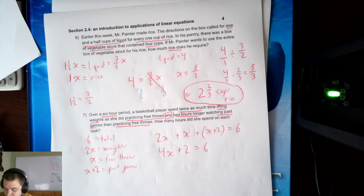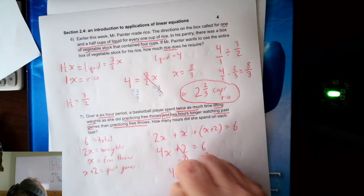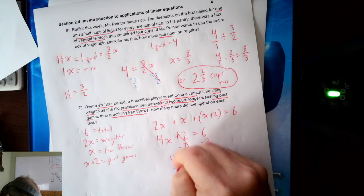I've got to get this plus 2 out of there to balance. 4X equals 6. Take away 2 is 4. I'll divide by 4. X equals, divide by 4. X equals 1.